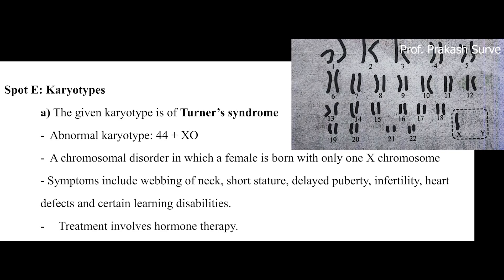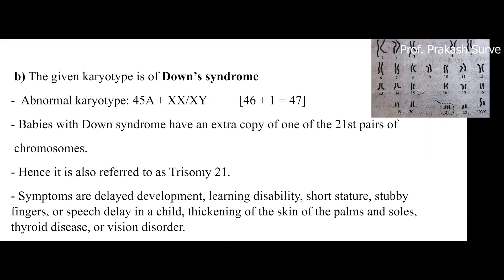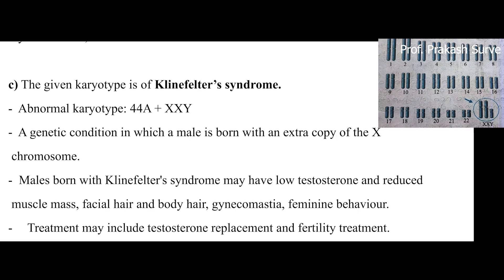Next is spot E, where you have to identify different karyotypes. First may be Turner syndrome, second may be Down syndrome, third may be Klinefelter syndrome. So here the charts will be there.